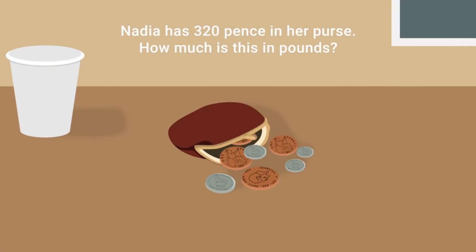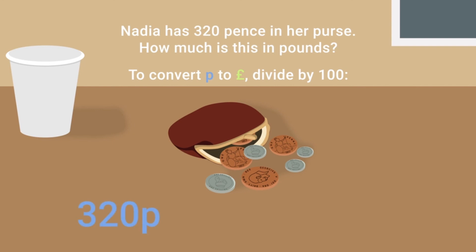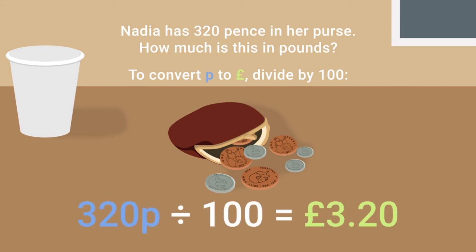Nadia has three hundred and twenty pence in her purse. How much is this in pounds? To convert pence to pounds, divide by 100. Three hundred and twenty pence divided by 100 equals three pounds twenty.